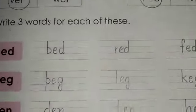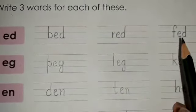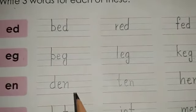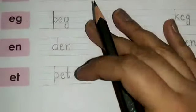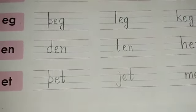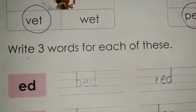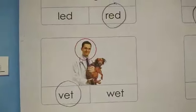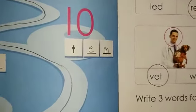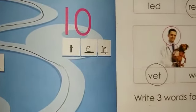Let's quickly revise them: E-D — bed, red, and fed. E-G — peg, leg, and keg. E-N — den, ten, and hen. E-T — pet, jet, and met. I hope students this exercise is also clear to you. You are supposed to do it in the same way in your books — book number 3, page number 15. Complete both these exercises in the same way. That was all for the day, students. Thank you, bye-bye, take care, and stay safe against COVID-19.